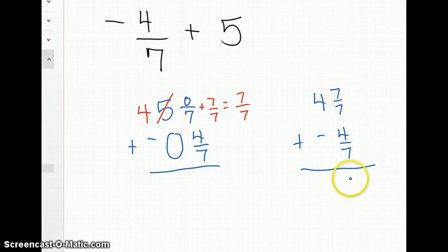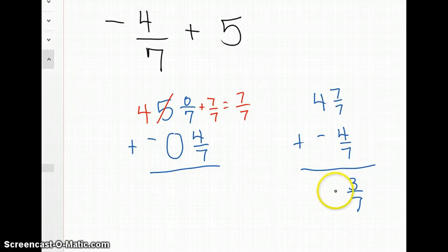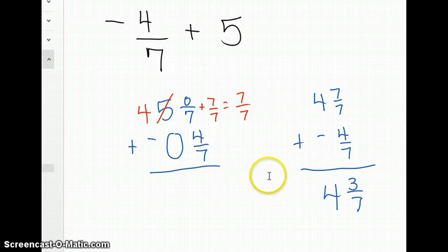So 7 minus 4 in the numerator gives me 3, and I keep my common denominator of 7. So I end up here with 4 and 3 sevenths, and it's positive because I have more positives.